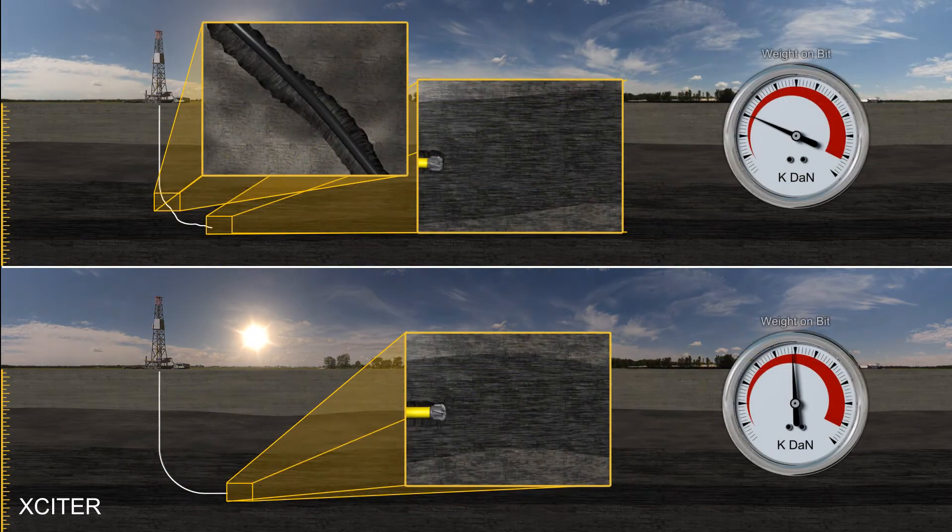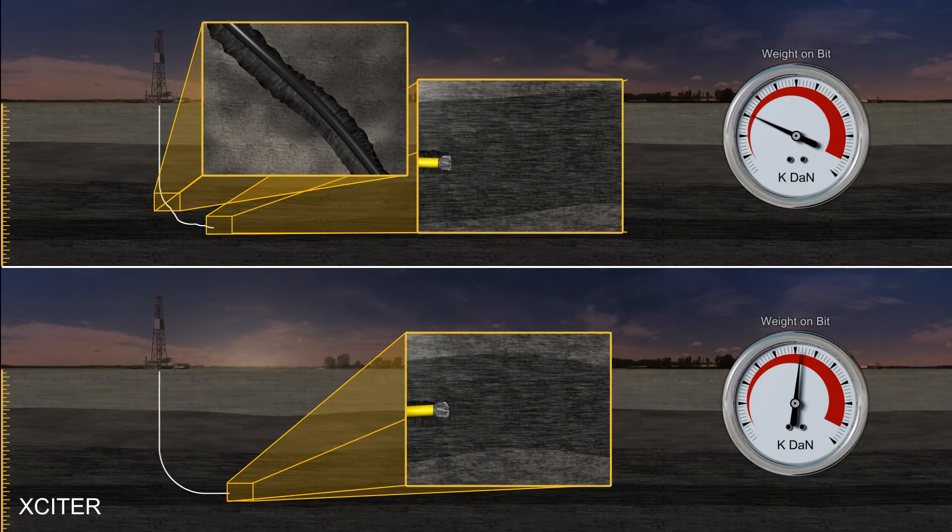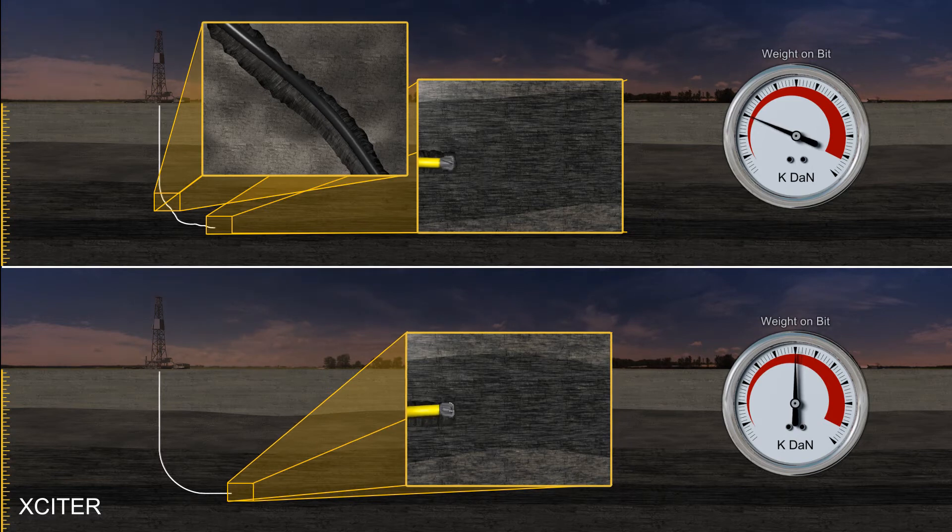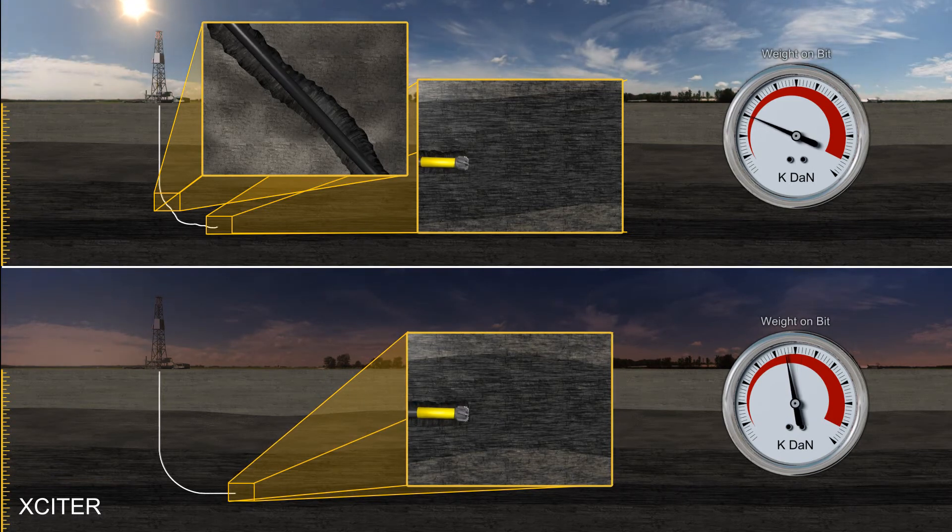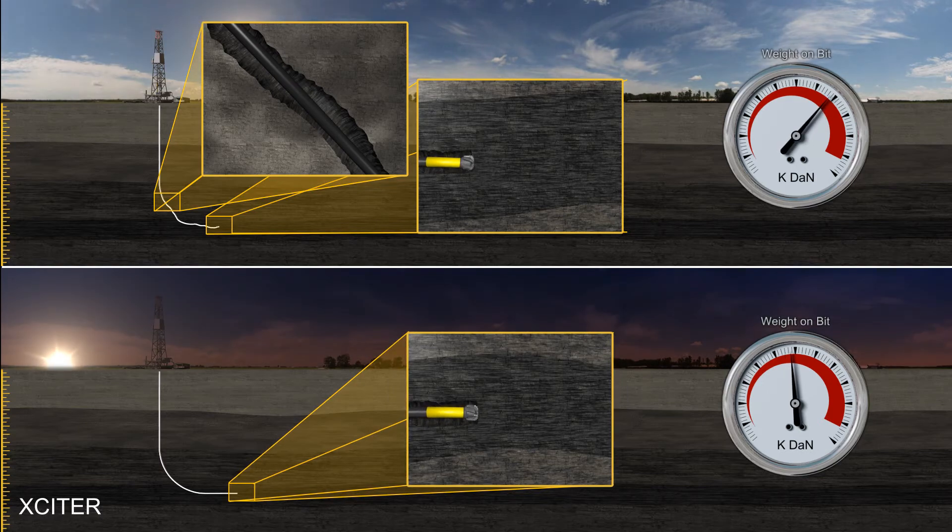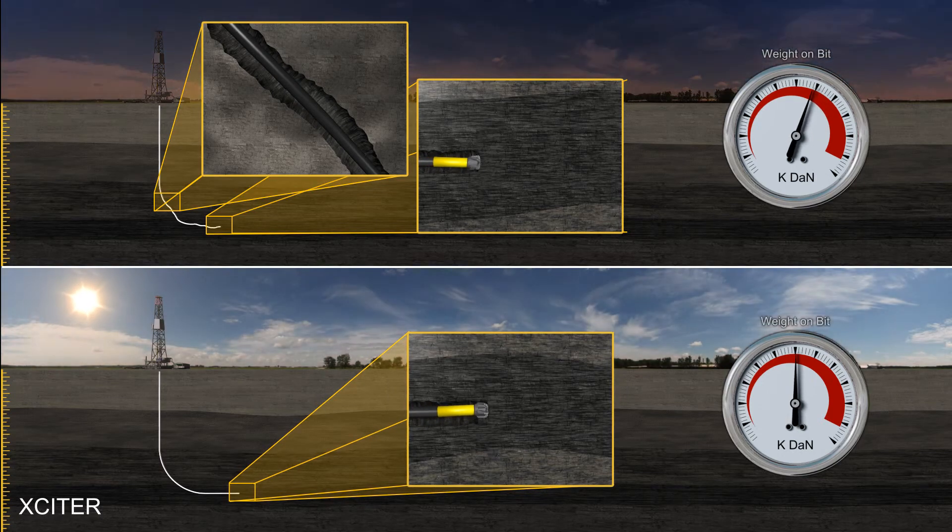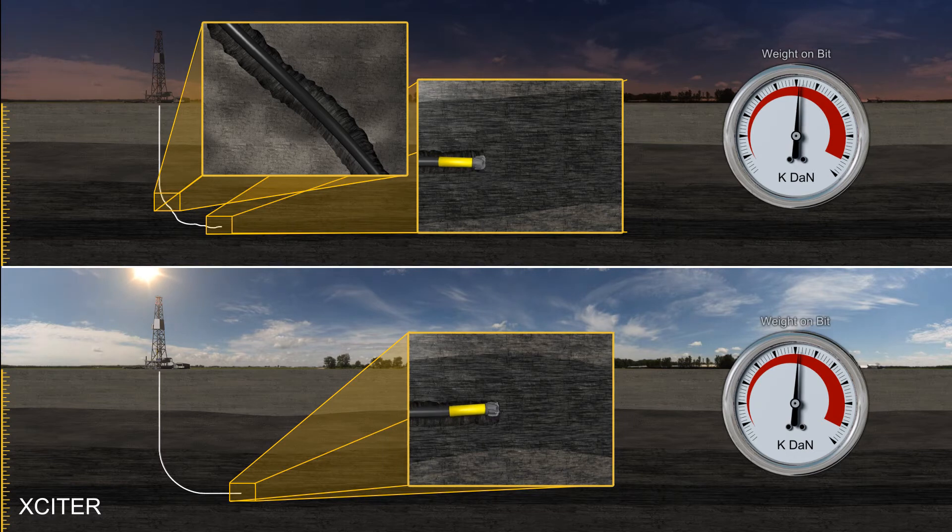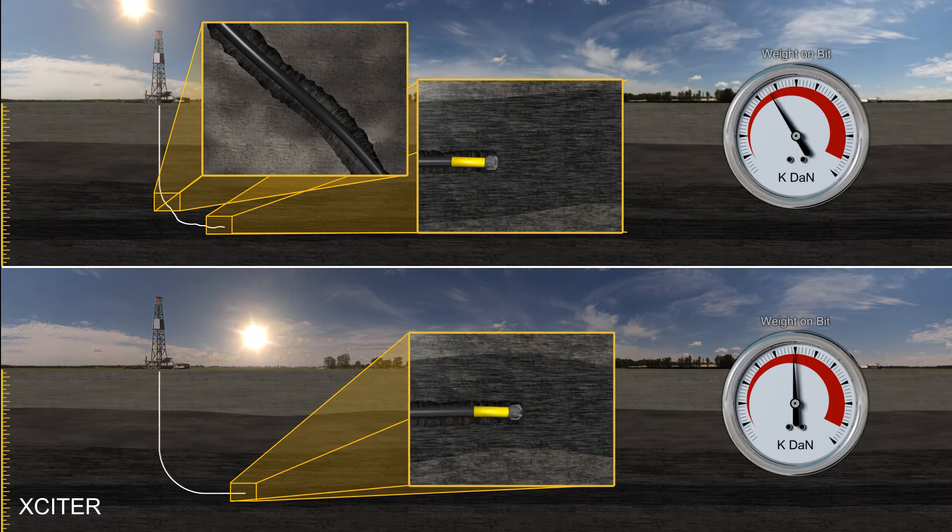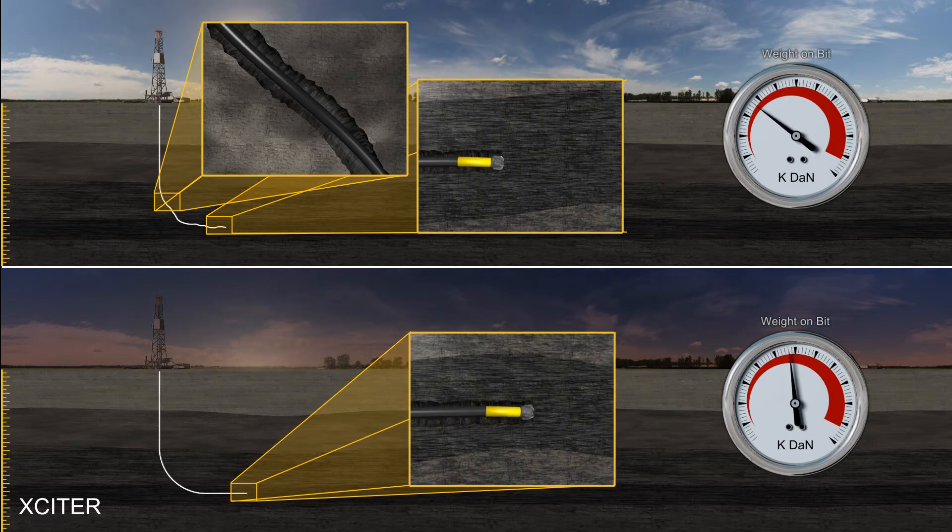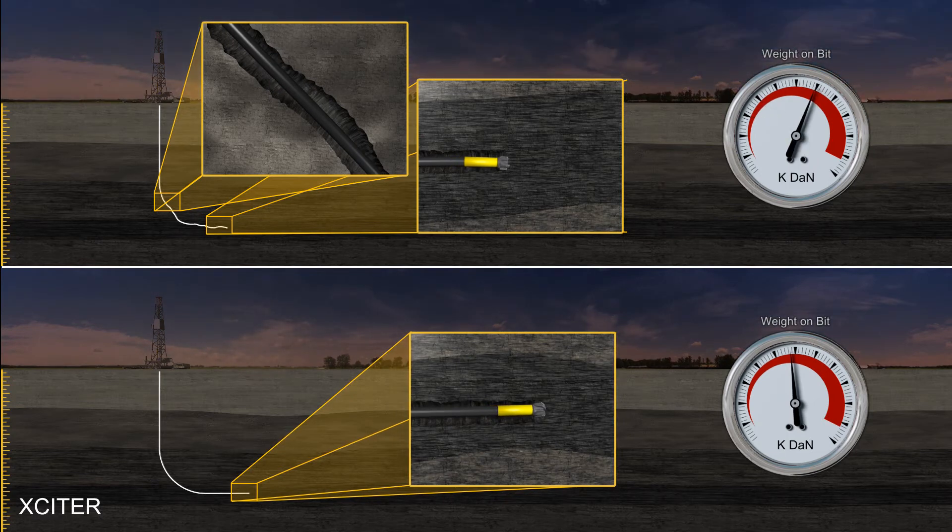Pipe buckling will occur when the push required to move the BHA drastically exceeds the required weight-on-bit necessary for the bit to drill. With an Exciter providing effective high-frequency vibration throughout the BHA and as part of the drill string, pipe buckling can be eliminated. Pipe buckling can and will prevent consistent weight-on-bit, which is necessary for maximum ROP and tool-face control.